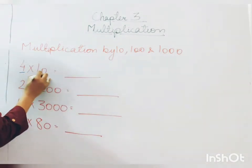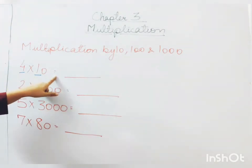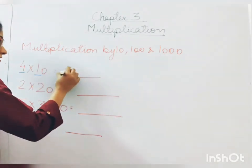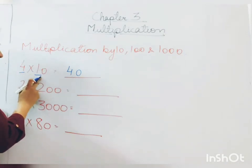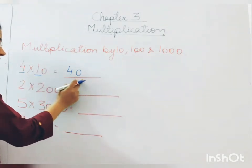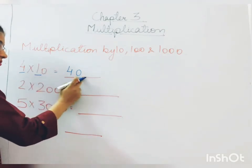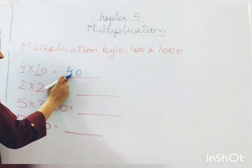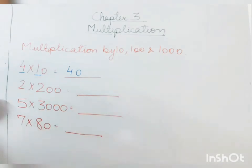So 4 multiplied by 10, 4 multiplied by 10 is 40. But what we actually did here, we just multiply 4 by 1 and add the number of 0s at the end, that is 1, 0. So 4 multiplied by 1 is 4 and add 1, 0 at the back.